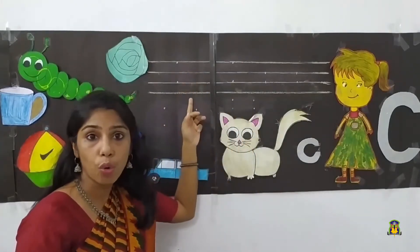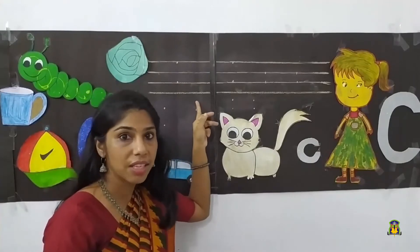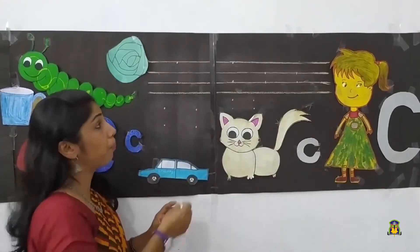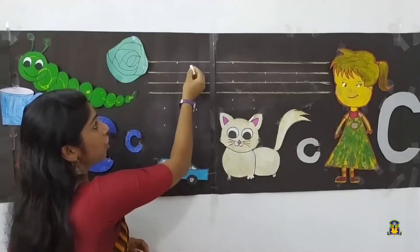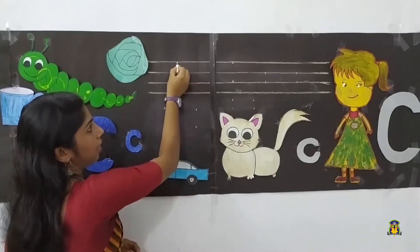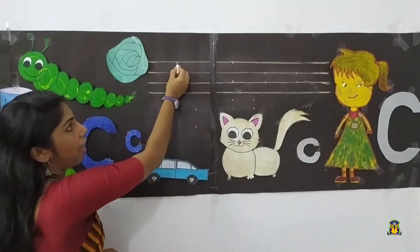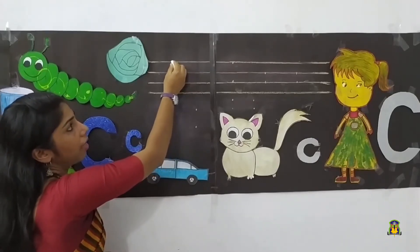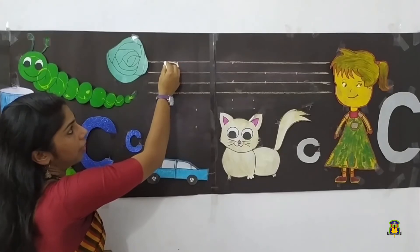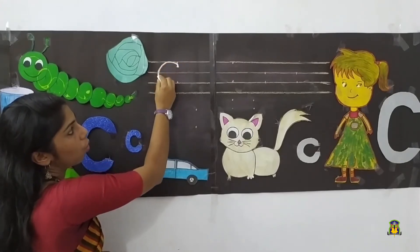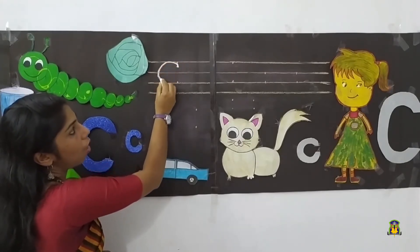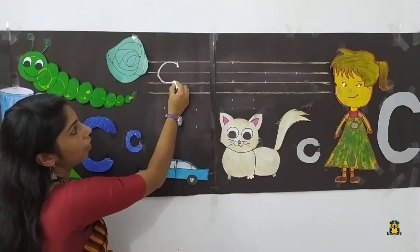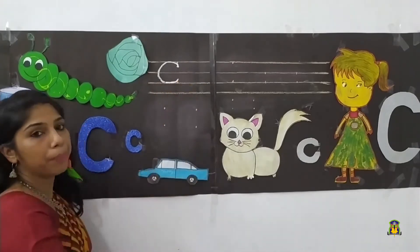As you all know, there are four lines in your notebook. Keep pencil down the first line. Slowly bring it up the line and make it curve. Go down and touch the third line.